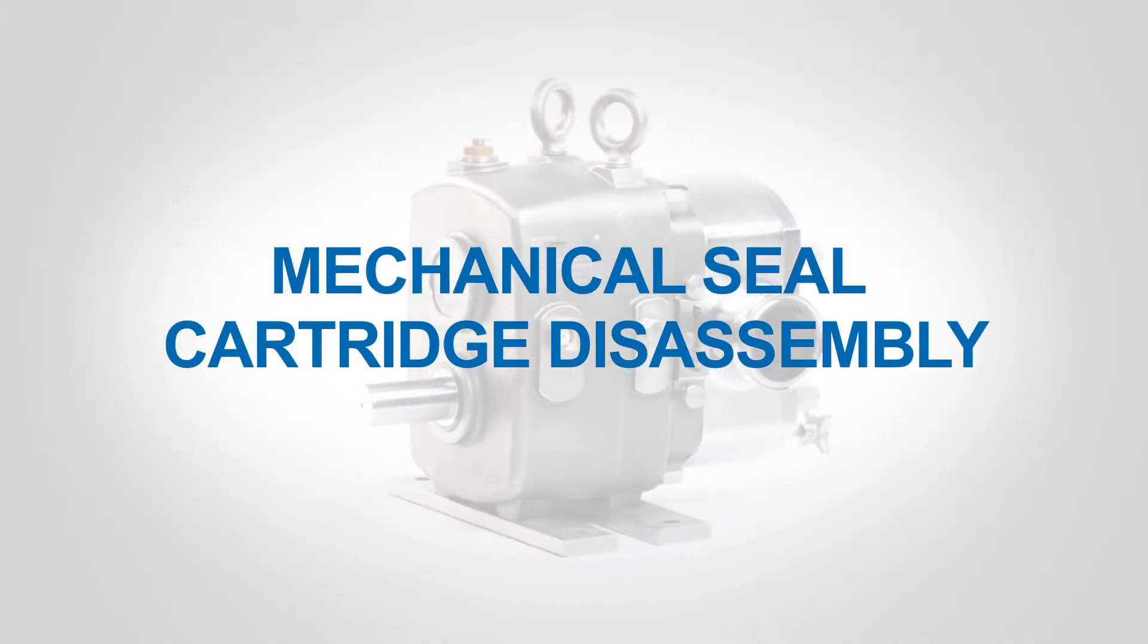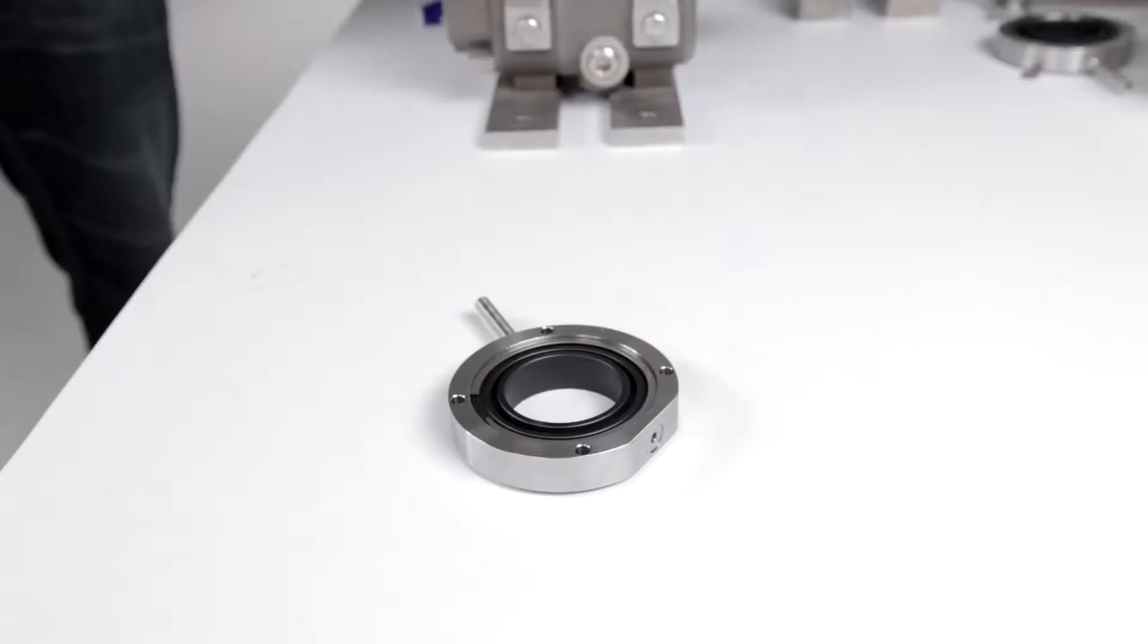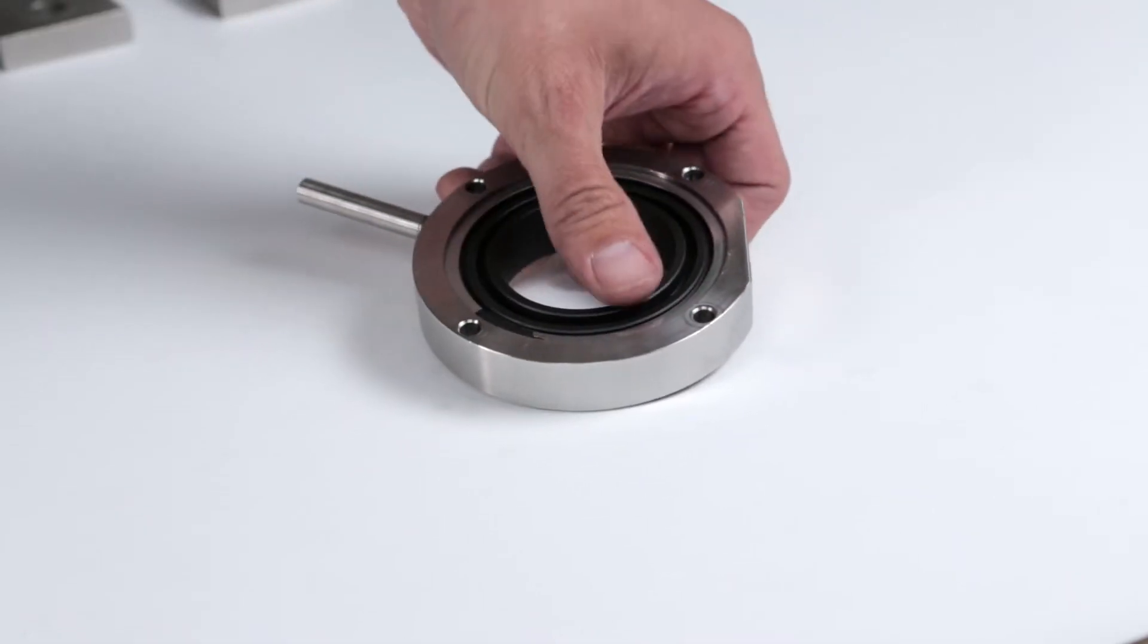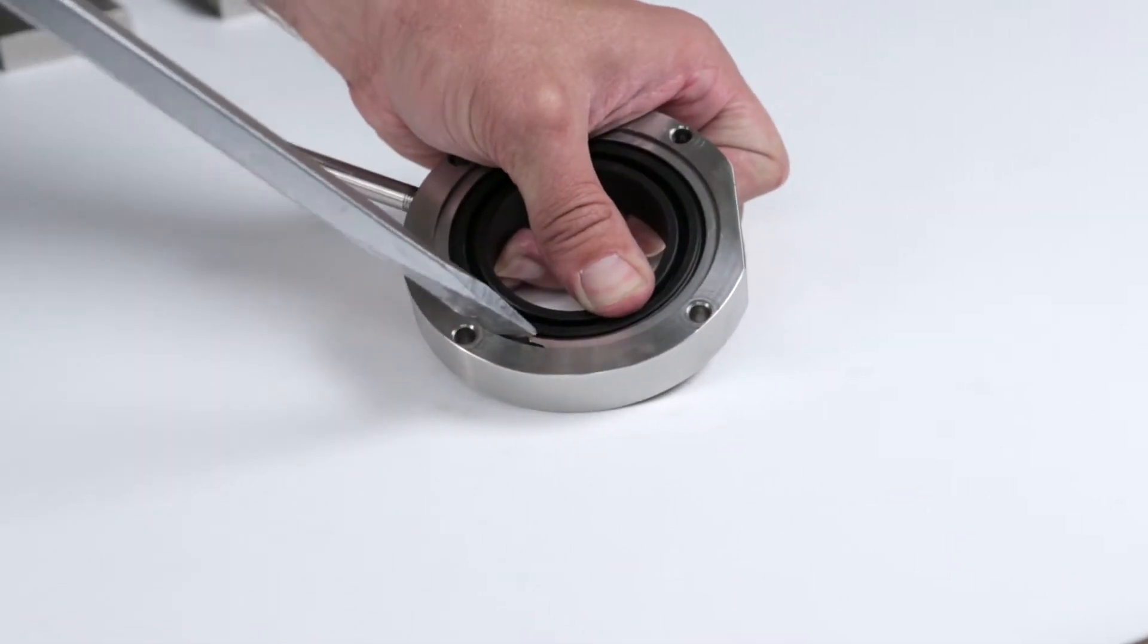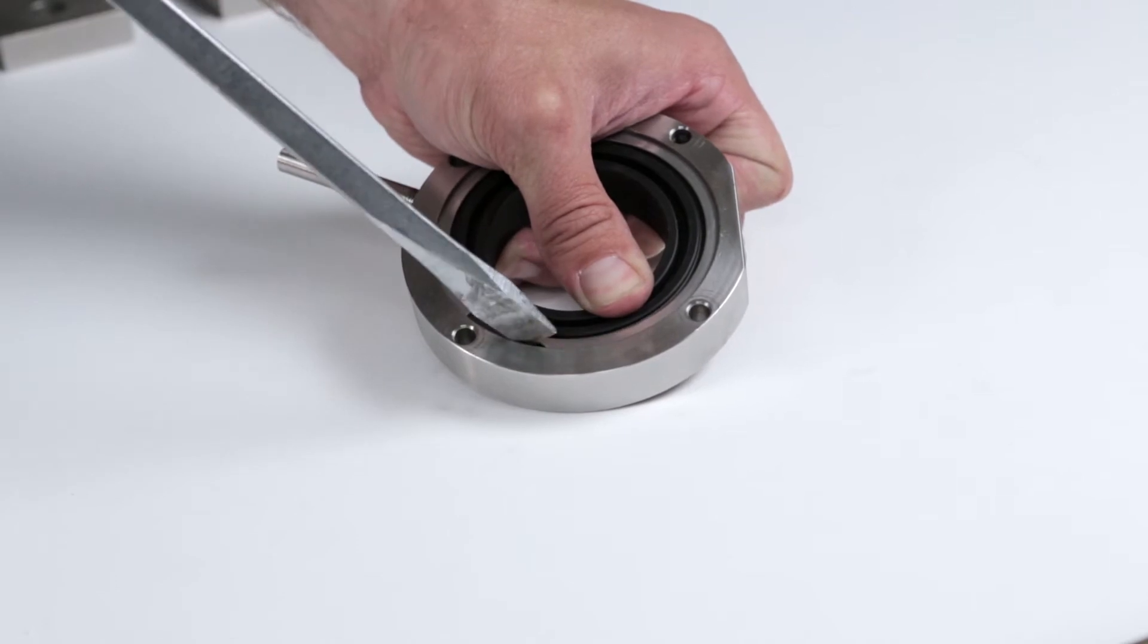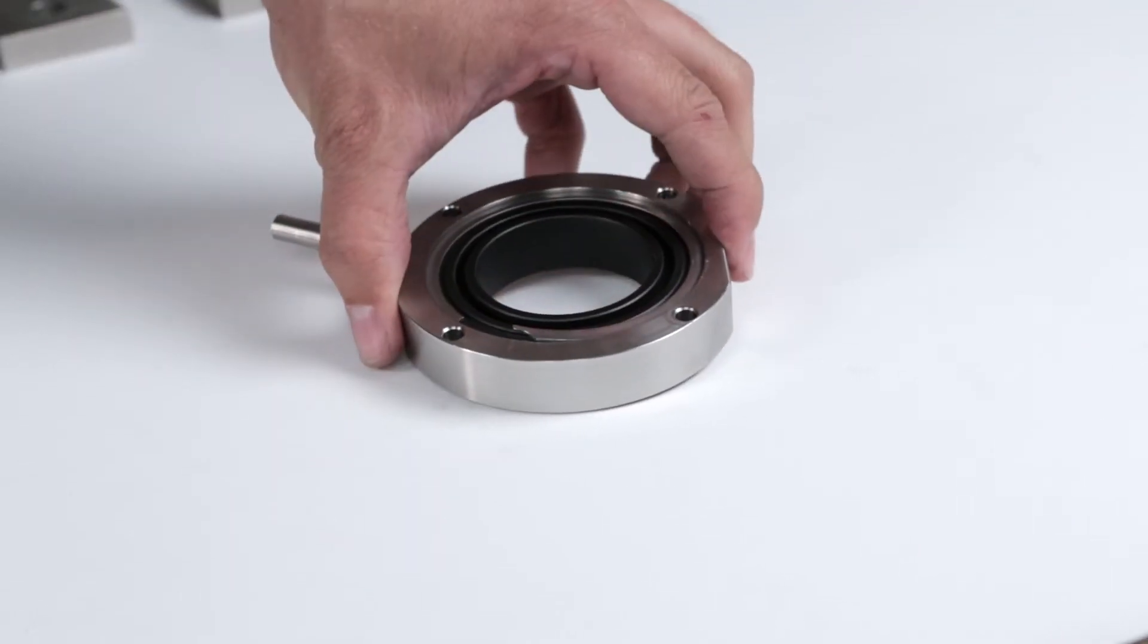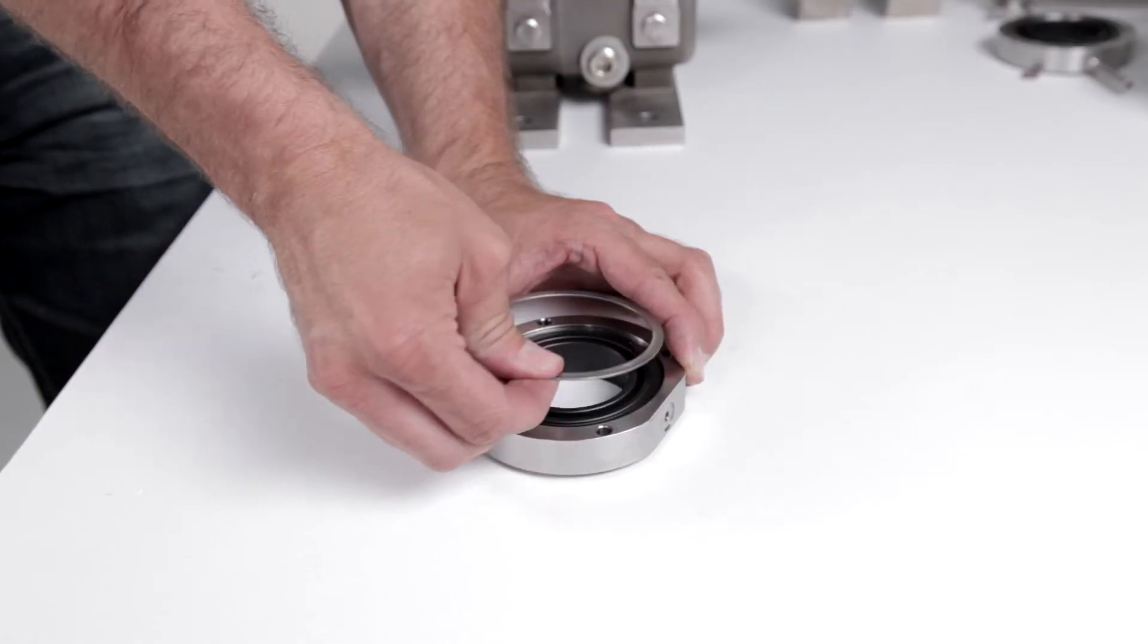Mechanical Seal Cartridge Disassembly. Place all of the seal parts on a clean work area and disassemble one cartridge at a time. Place the seal cartridge with the seal face up onto a flat surface. Compress the seal so that all of the pressure is off of the seal retaining ring. Pry the seal retaining ring out of the seal housing.